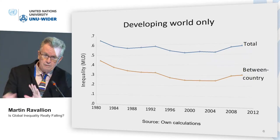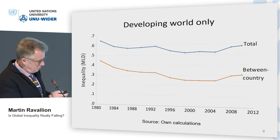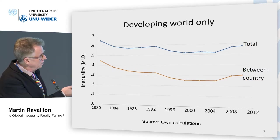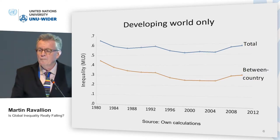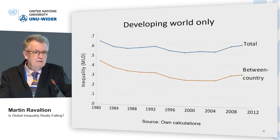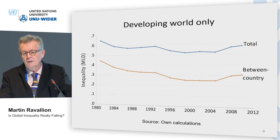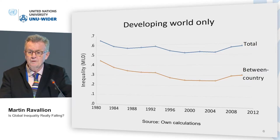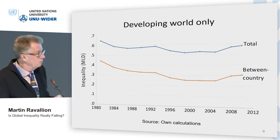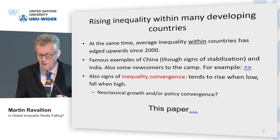In the developing world alone — taking out the rich world — the picture is somewhat similar but has the interesting feature that it's starting to tick up. That's the developing world only. Clearly that's been driven by China passing through the mean for the developing world as a whole. China for a long time was bringing down global inequality through the between-country component, and now it's increasing global inequality because its mean is above the mean for the developing world.